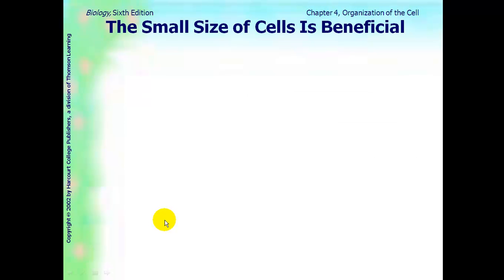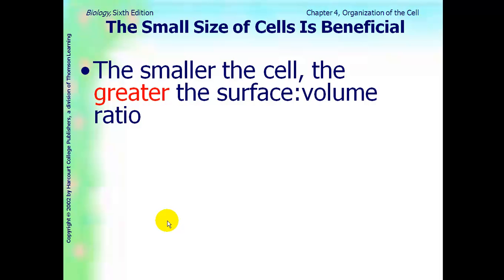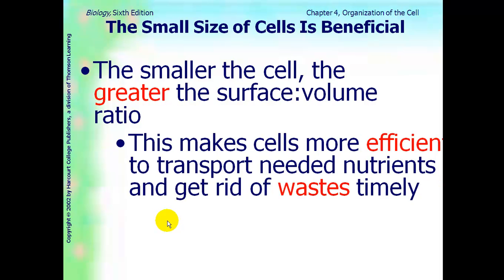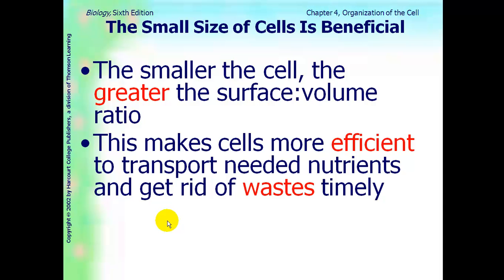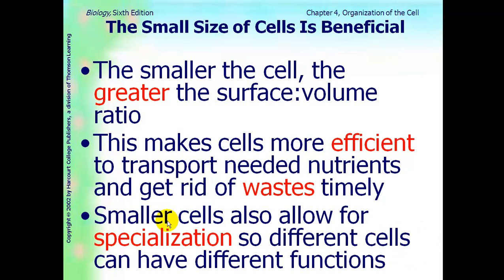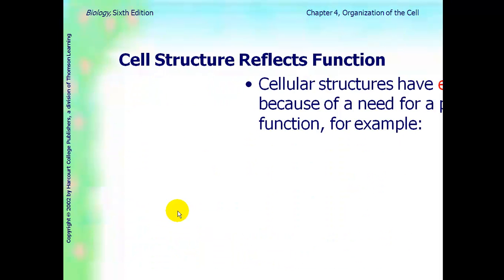So, what does this mean? Well, the small size is very beneficial to them. The smaller the cell, the greater the surface to volume ratio. This makes cells more efficient because they can get the food and the nutrients that they need in an efficient manner quickly, and they can get rid of their waste in a timely manner. Smaller cells also allow for cell specialization, which is how cells become different types of cells and do different functions.